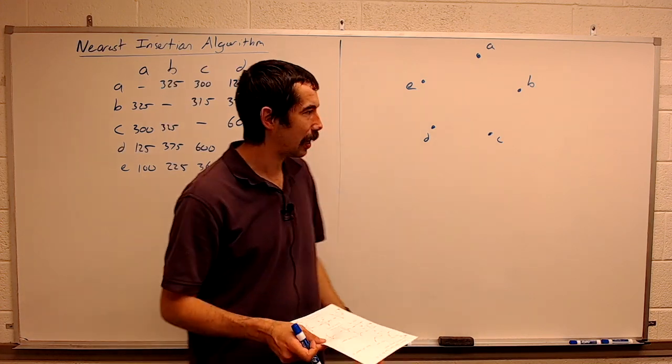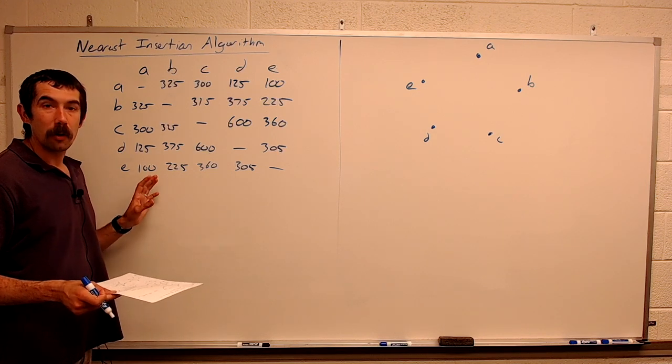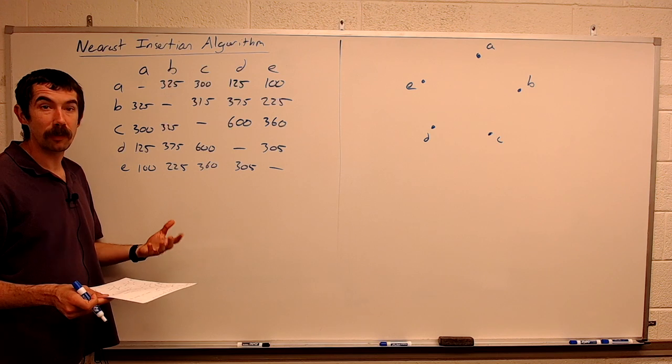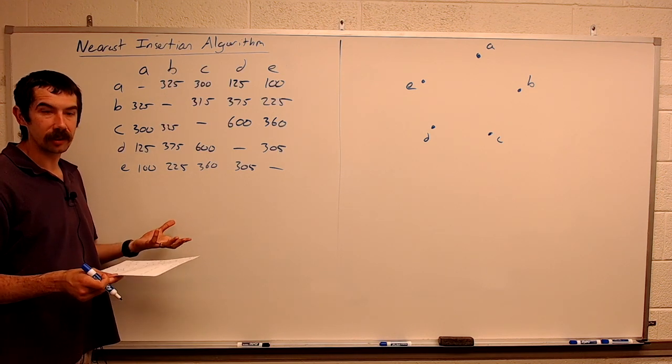Over here I have the weights for a weighted complete graph, K5, and we want to find a Hamiltonian cycle using the nearest insertion algorithm.